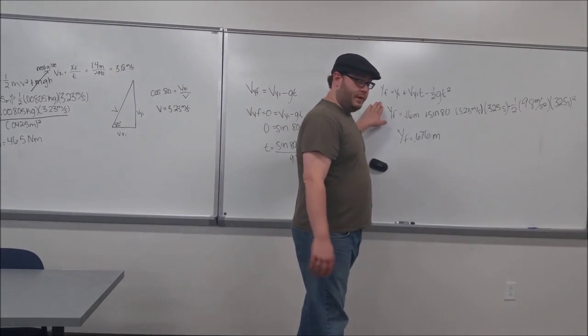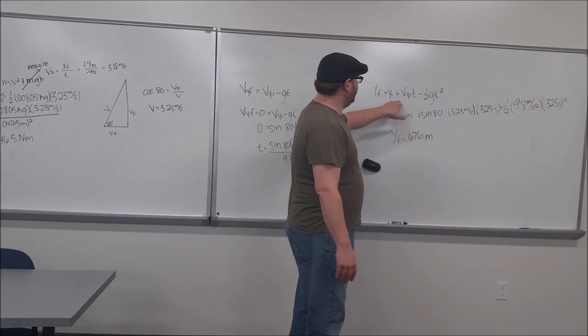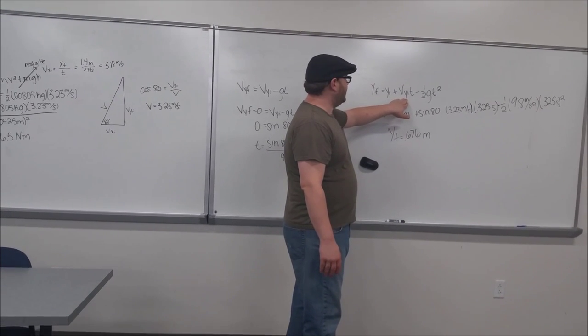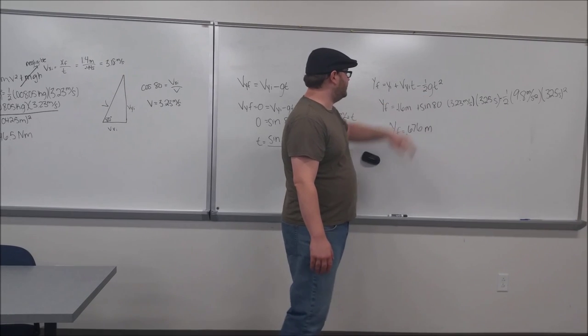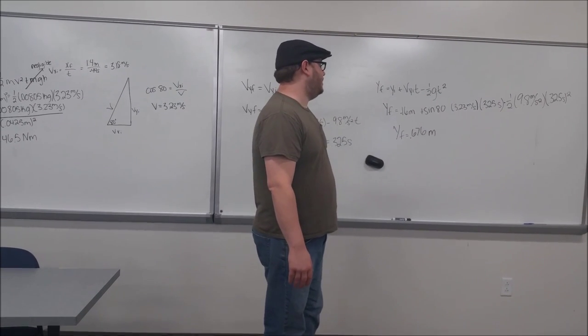We come to the equation y final equals y initial plus velocity of y initial times time minus one-half g t squared.